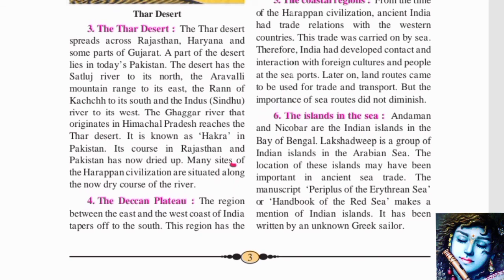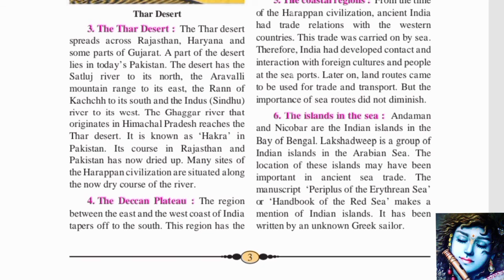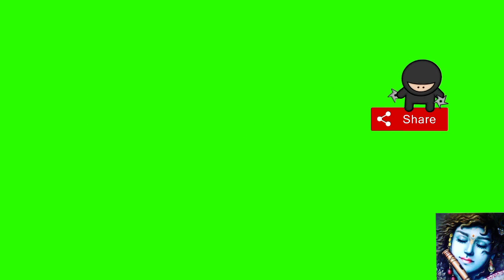Many sites of the Harappan civilization are situated along the now-dry course of this river. The Harappan civilization, which we discussed as the first civilization, has many sites found along the dried-up course of the Ghaggar-Hakra river. This river once had a lot of water, which supported those ancient settlements, but now it has dried up in the desert.